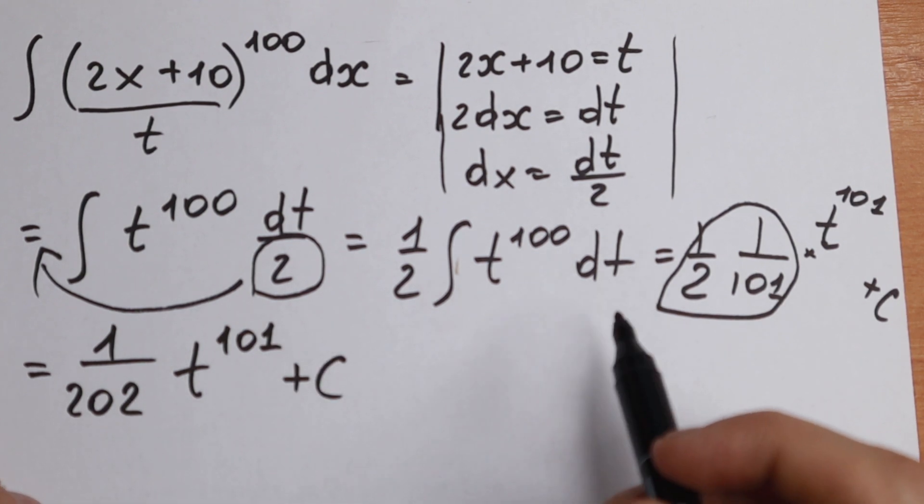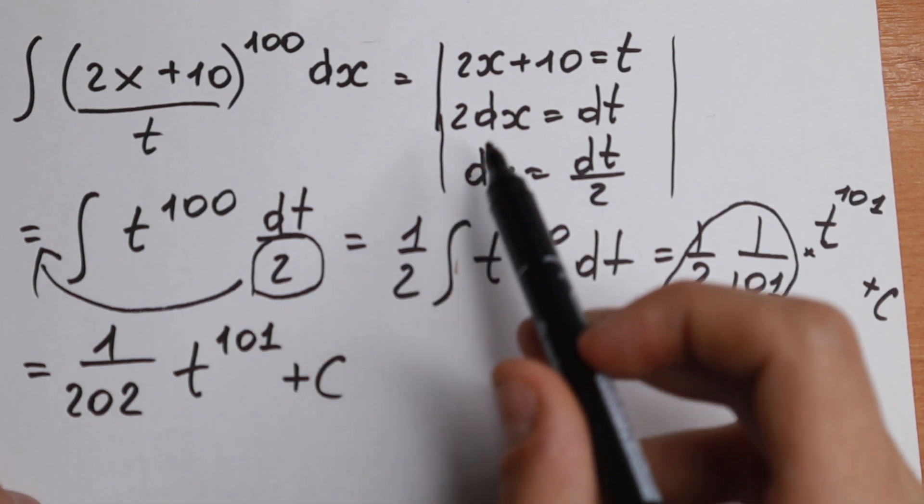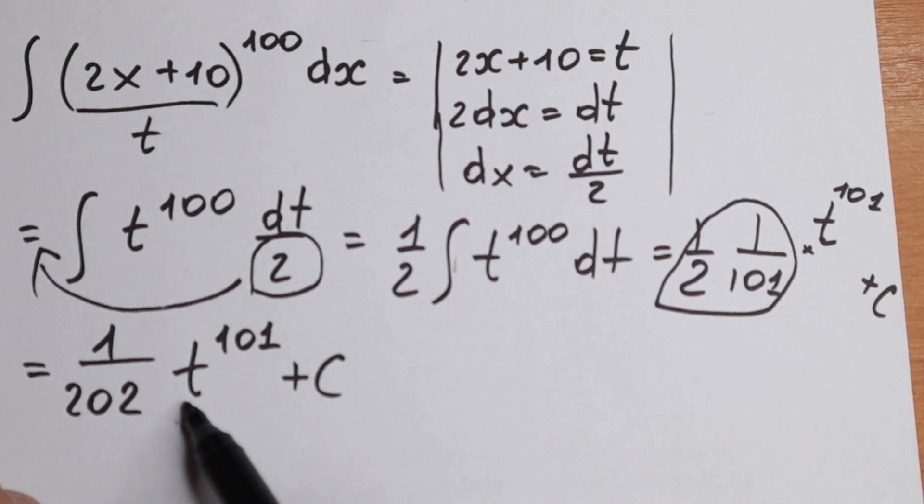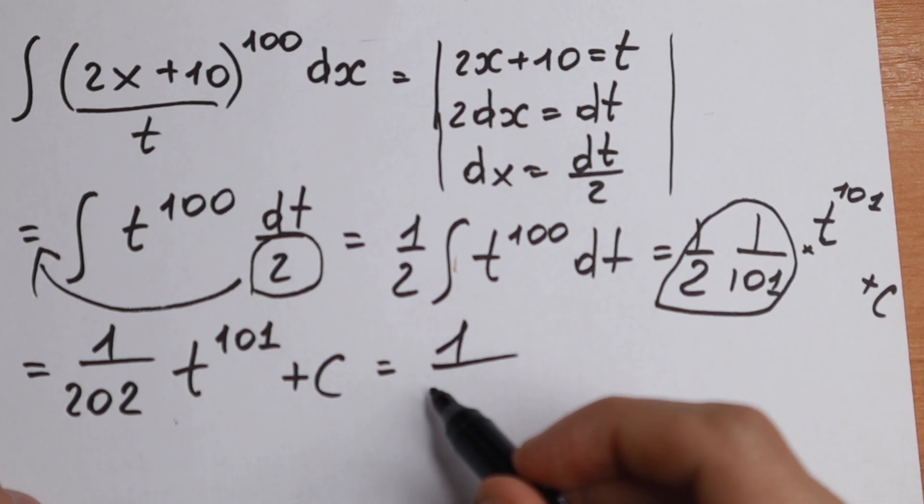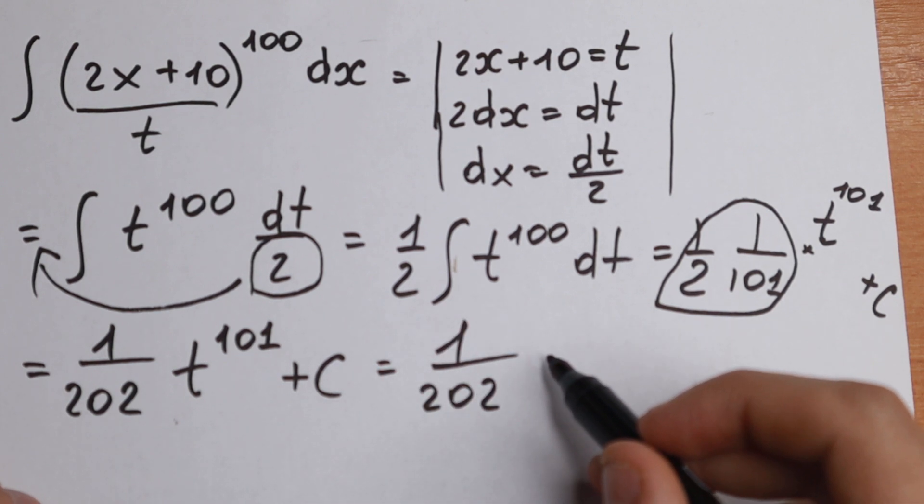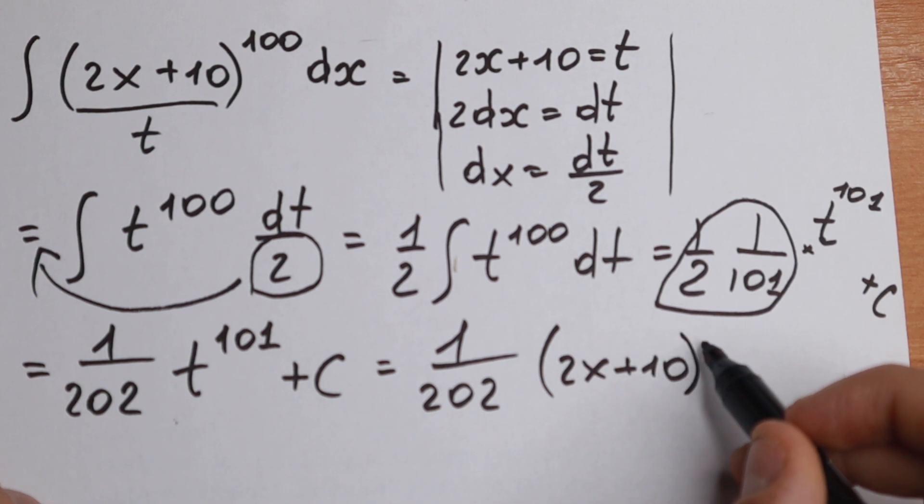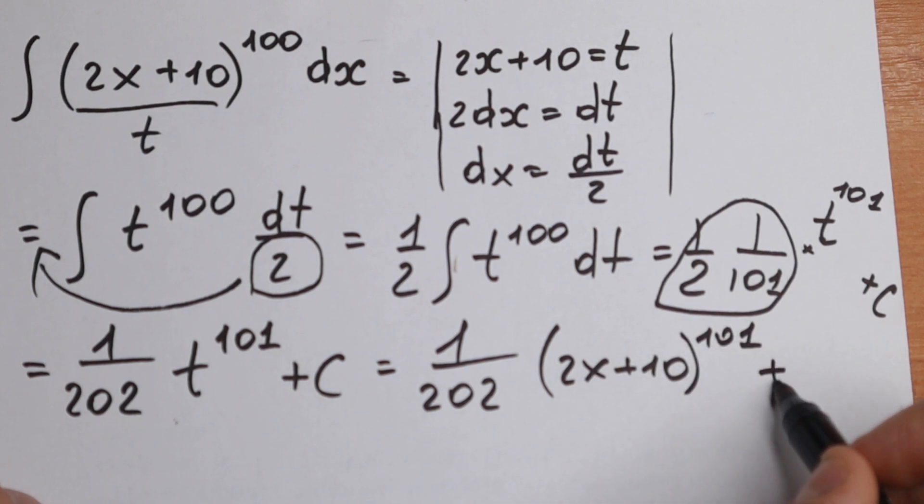So this is our integral, we found it, but it works with t. And we need to find a substitution. So t equal to 2x plus 10. And right here, we have our t. So our final answer will be 1 divided by 202, and in parentheses, we will have 2x plus 10 to the power 101, and plus C.